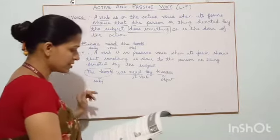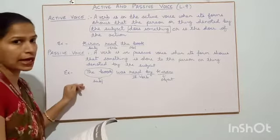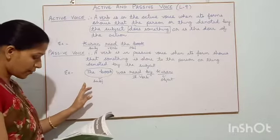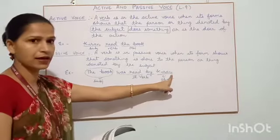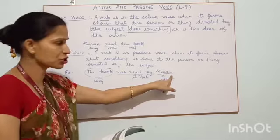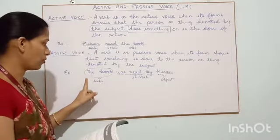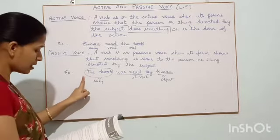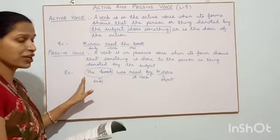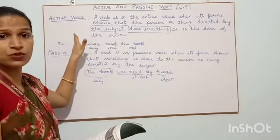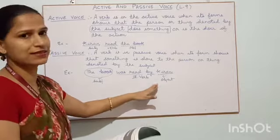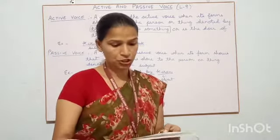In this, what have you observed? The subject is not doing any action — 'the book' is not doing any action. Rather, it is receiving the action done by Kiran. The book was read by whom? By Kiran. Kiran is doing the action, and this action is received by the book. In active voice, the subject does the action. In passive voice, the subject receives the action. Keep this 'by' in mind — it is generally used with passive voice.